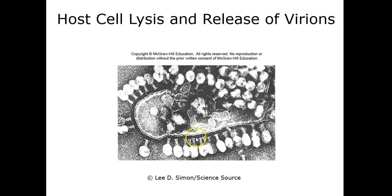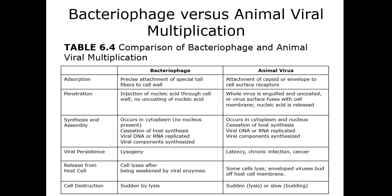Table 6-4 from your text is great for studying — it gives descriptions comparing the bacteriophage or lytic cycle and the animal viral life cycle, highlighting the key similarities and differences between each phase of the multiplication cycle.